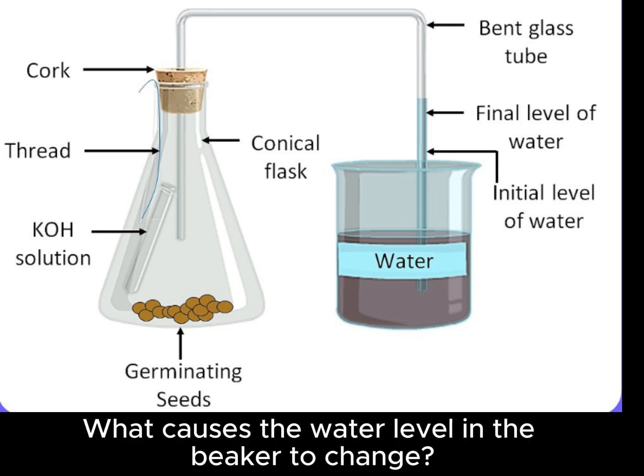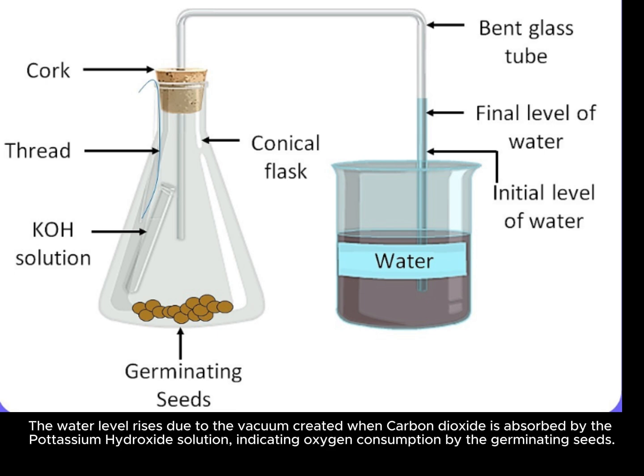What causes the water level in the beaker to change? The water level rises due to the vacuum created when carbon dioxide is absorbed by the potassium hydroxide solution, indicating oxygen consumption by the germinating seeds.